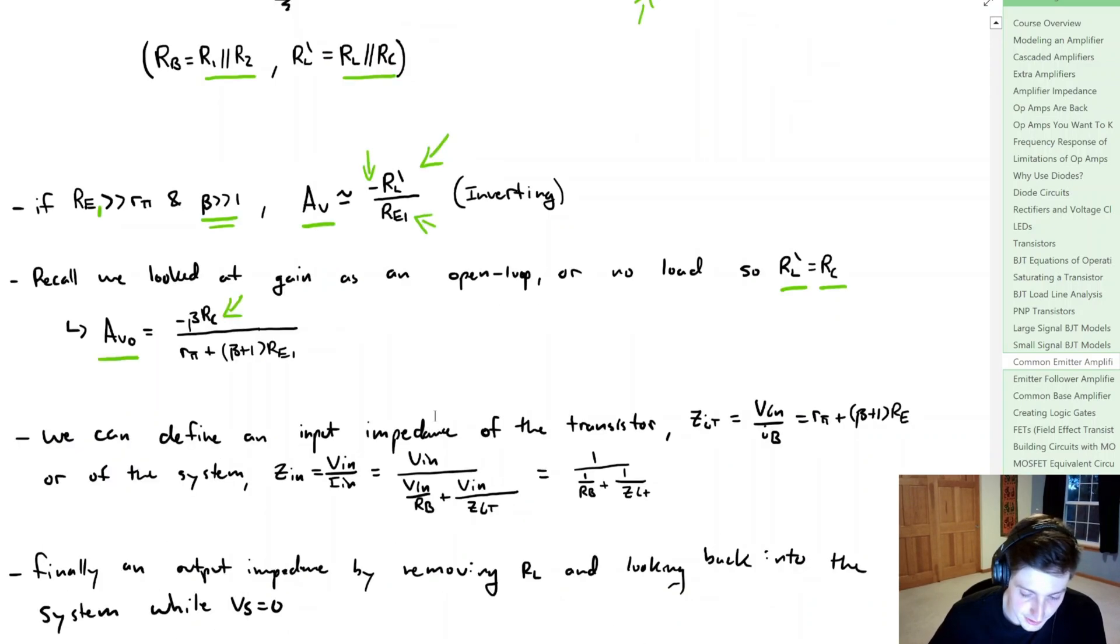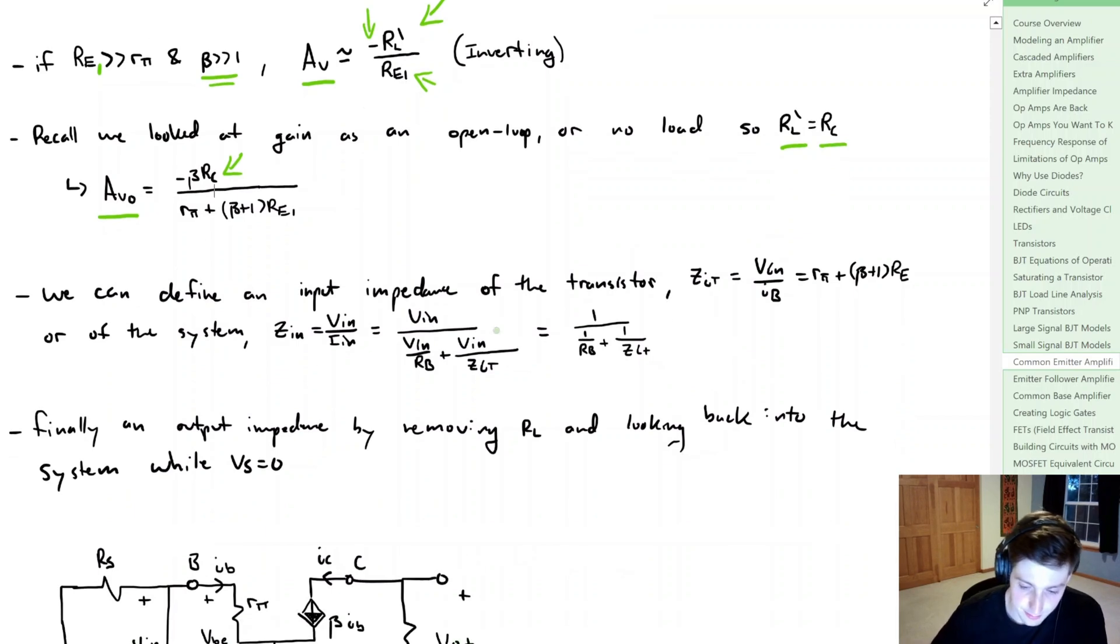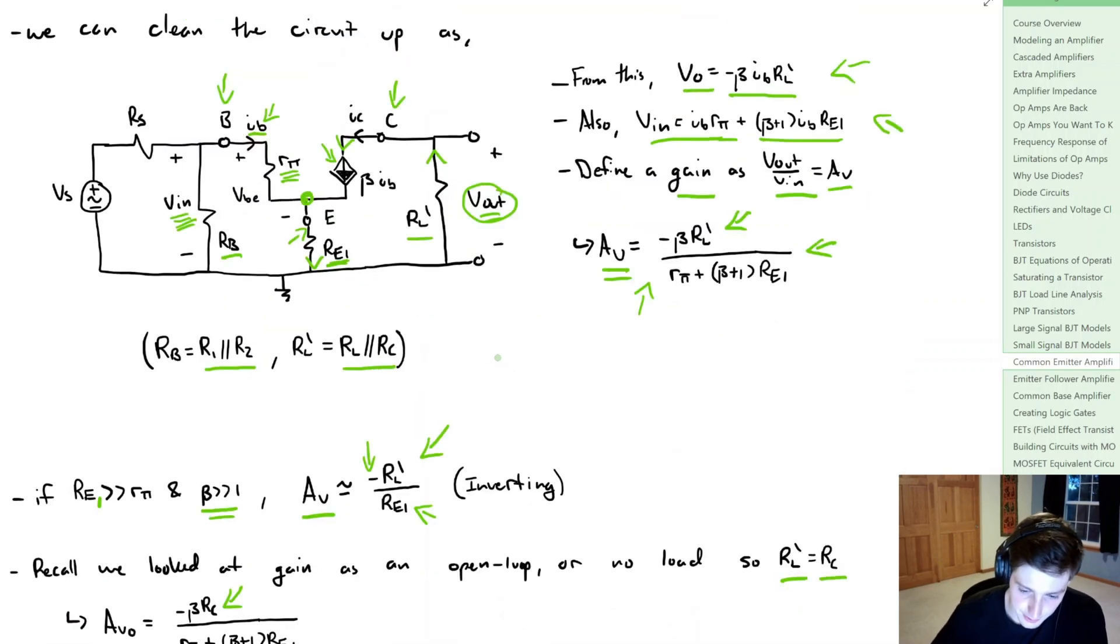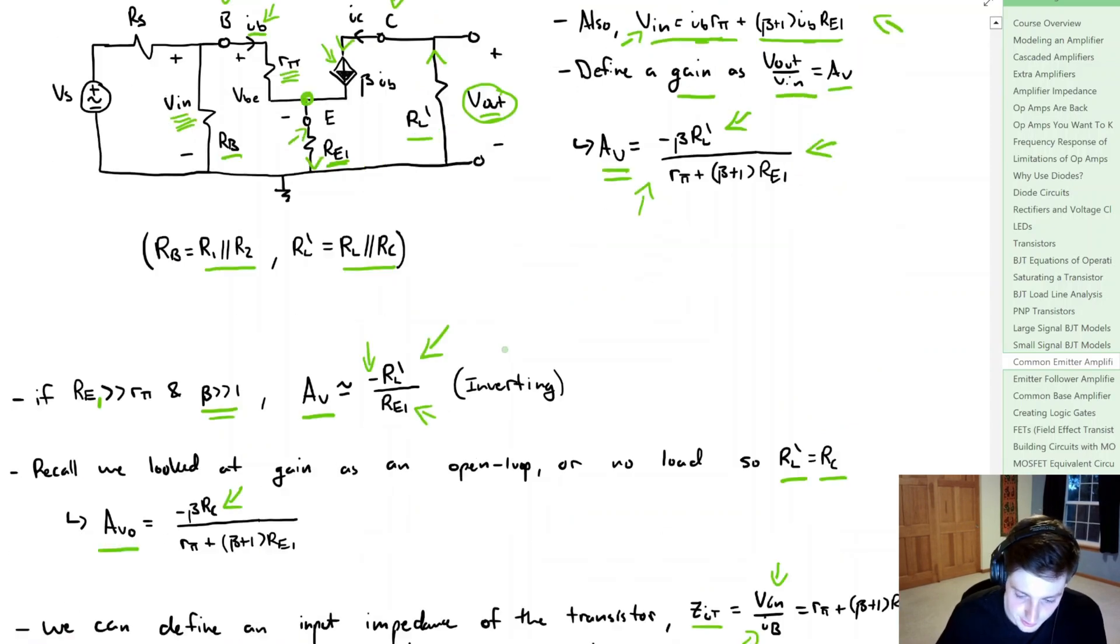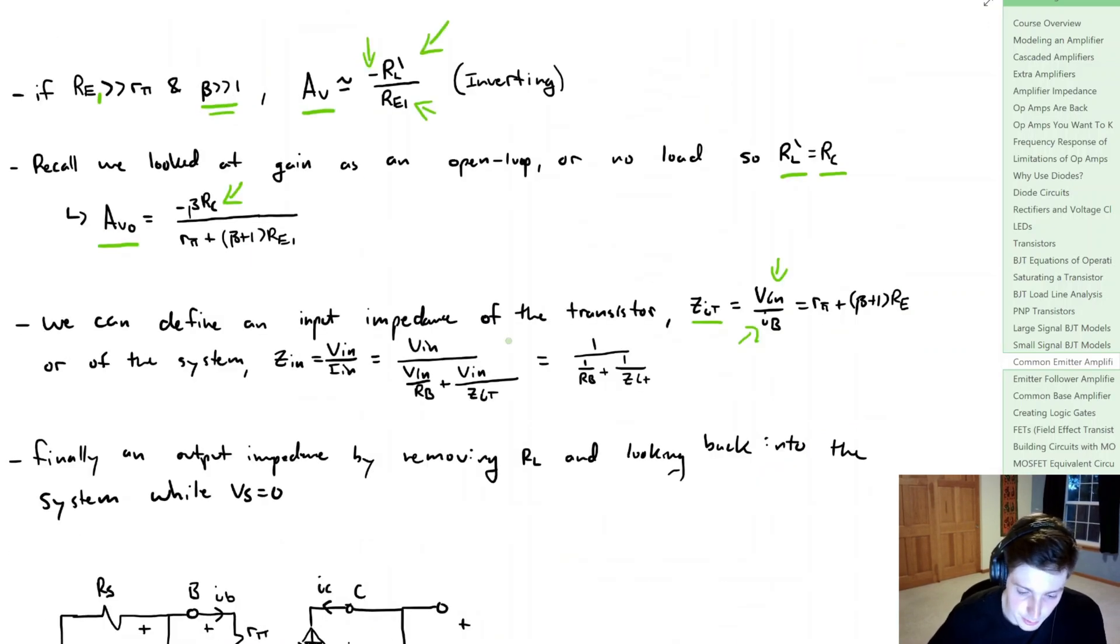Now we can define an input impedance of the transistor, call it ZI sub T, and that's going to be equal to Vin divided by the base current. So if we scroll up above, well we can see from this equation for Vin, we did have the base current in each term, so we can divide by that, so that the input impedance of the transistor is simply equal to Rpi plus beta plus 1 times RE1.